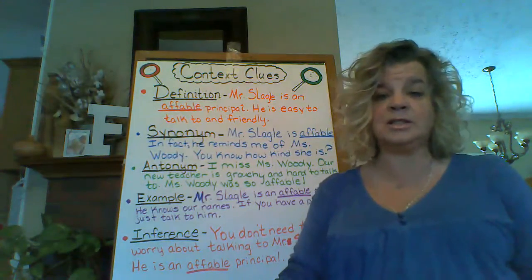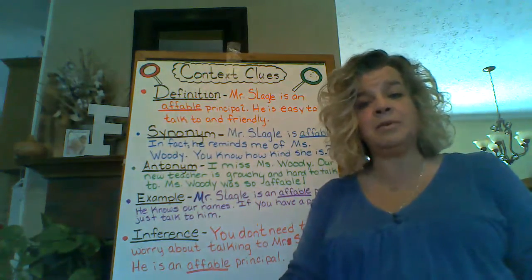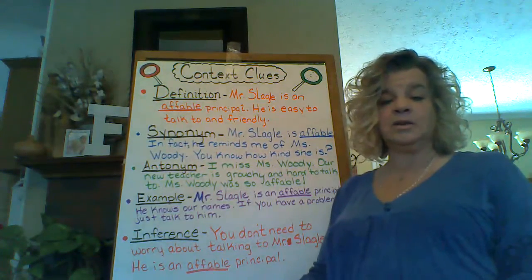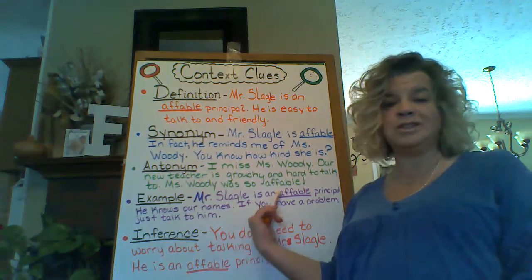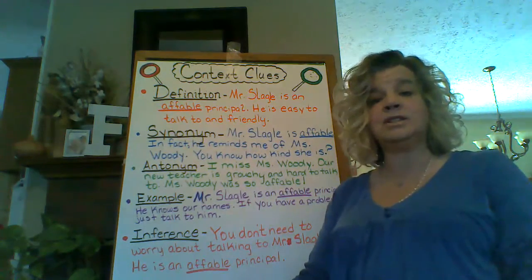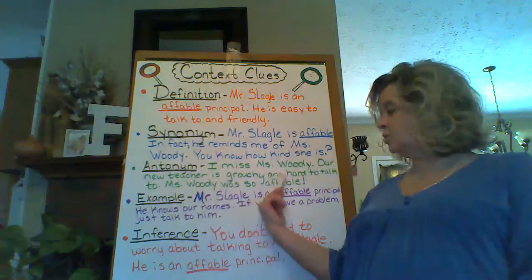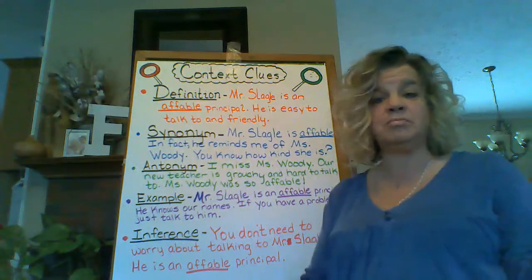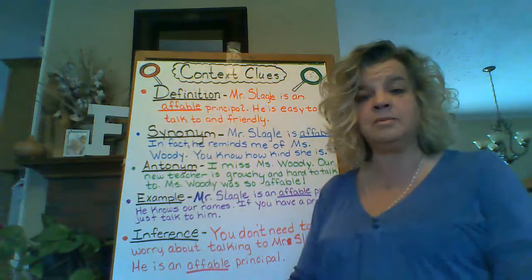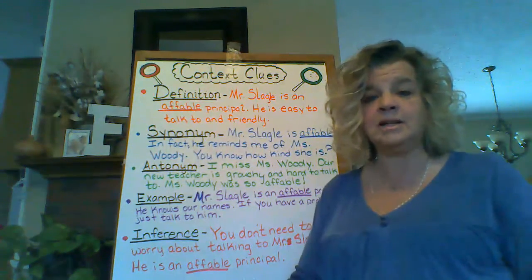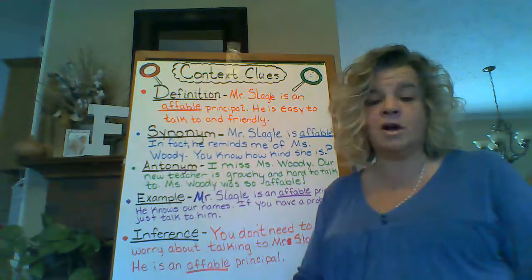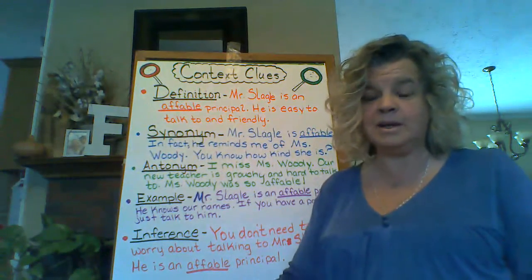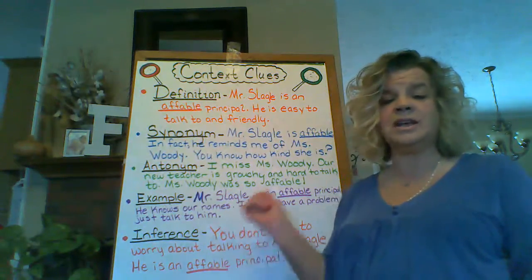The next one is just an example — the author might give you an example of what the word means. So looking at our next sentence: Mr. Slagle is an affable principal. He knows our names. If you have a problem, just talk to him. So there it just gave us an example. He's an affable principal — he knows everyone's names, and if you have a problem, just talk to him. Does it sound like he's mean or he's kind? If you've got a problem, you talk to him — sounds like a kind person, right? He knows everybody's name, so that would make him a nice person, a person that gets to know you. That just gives us an example.